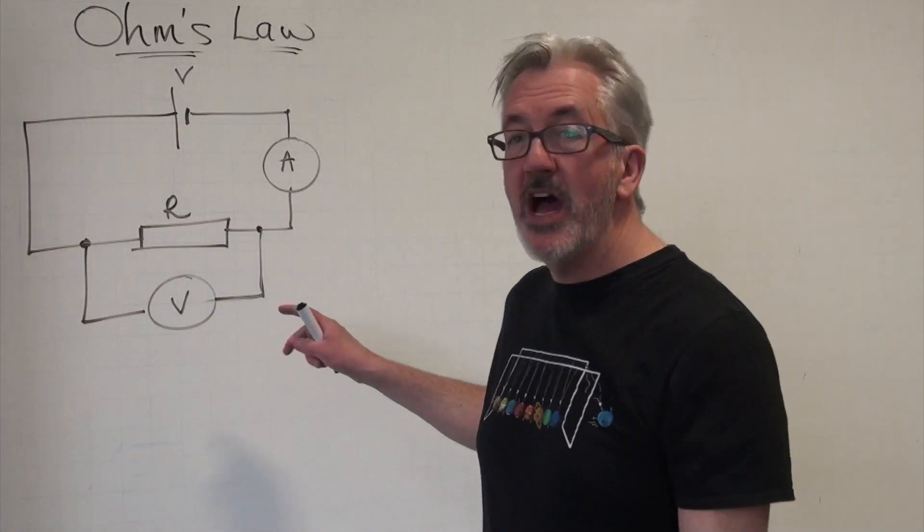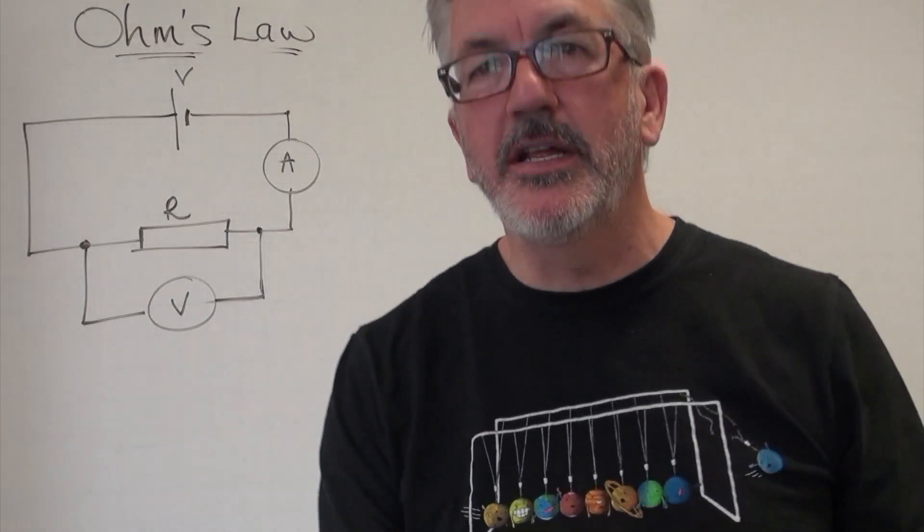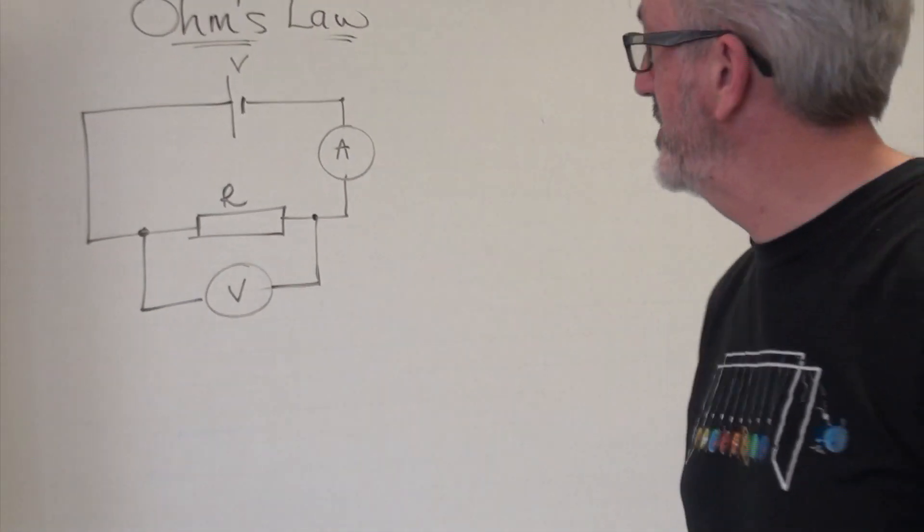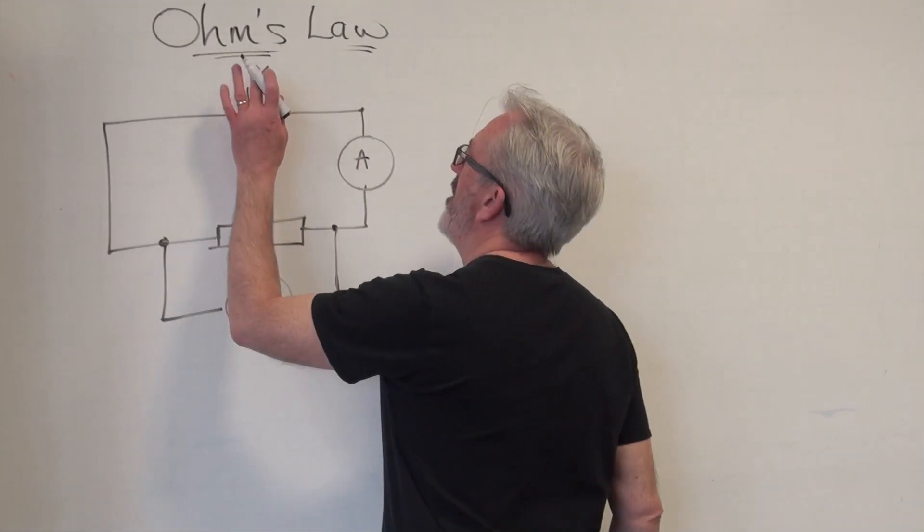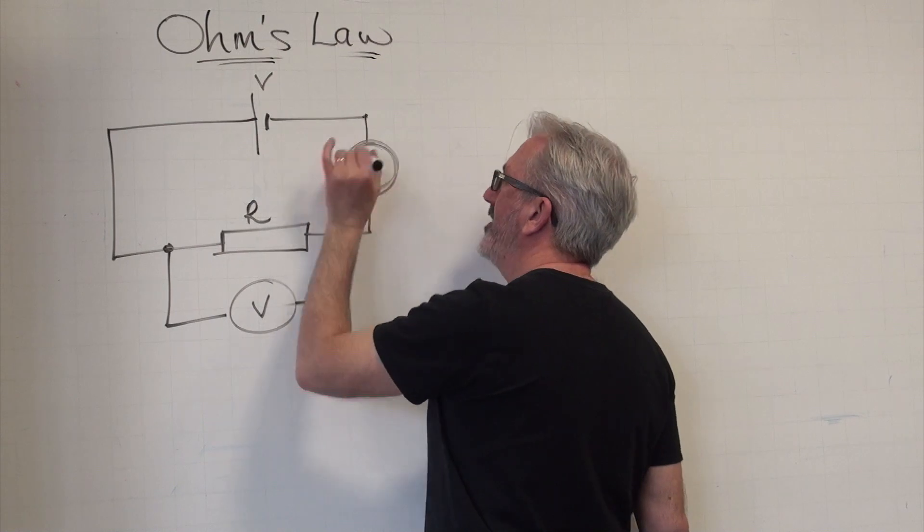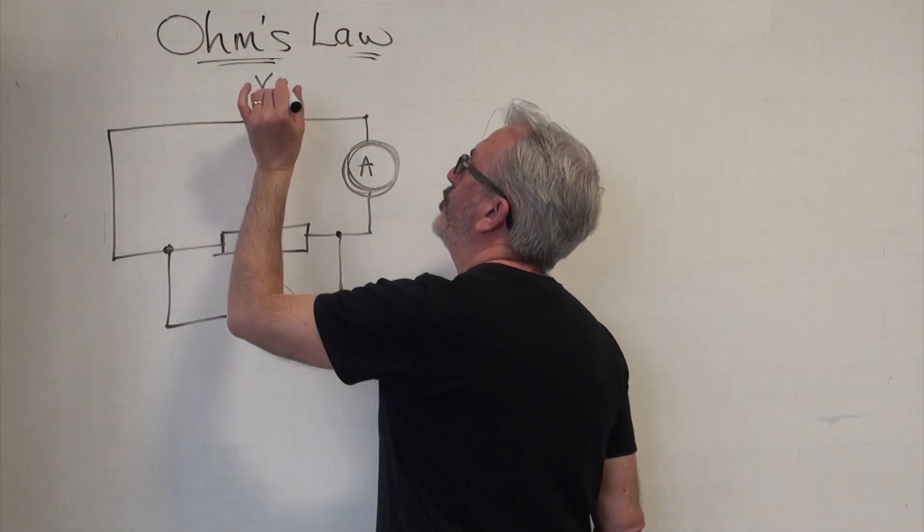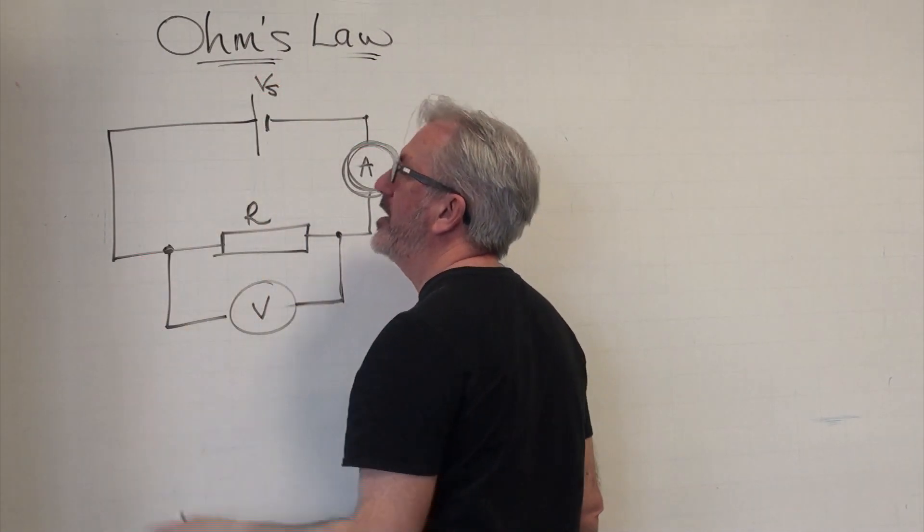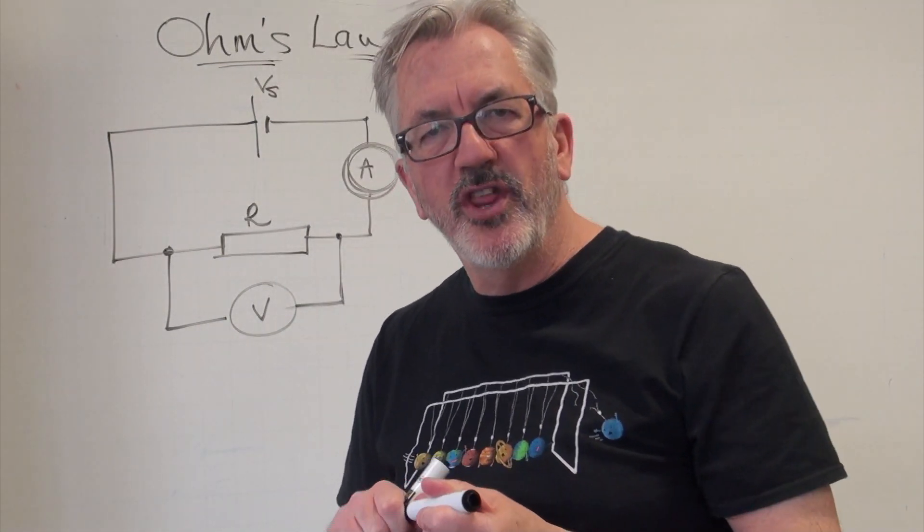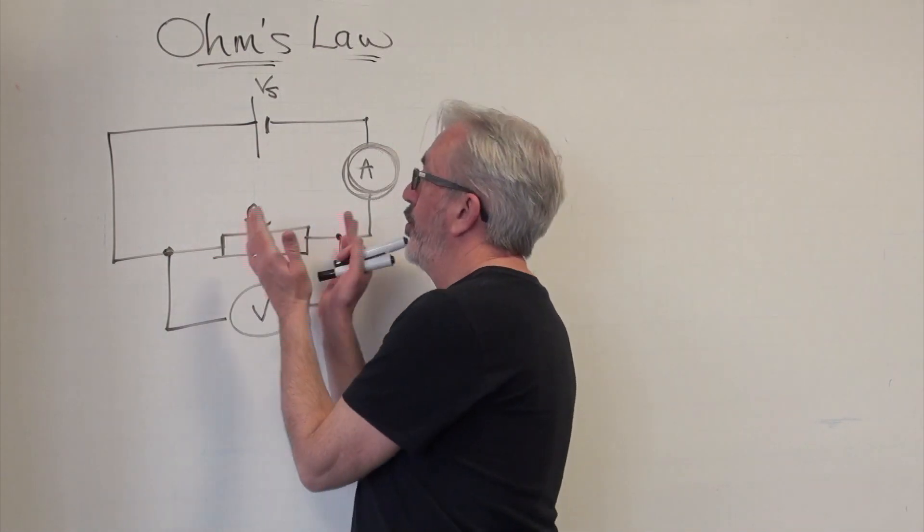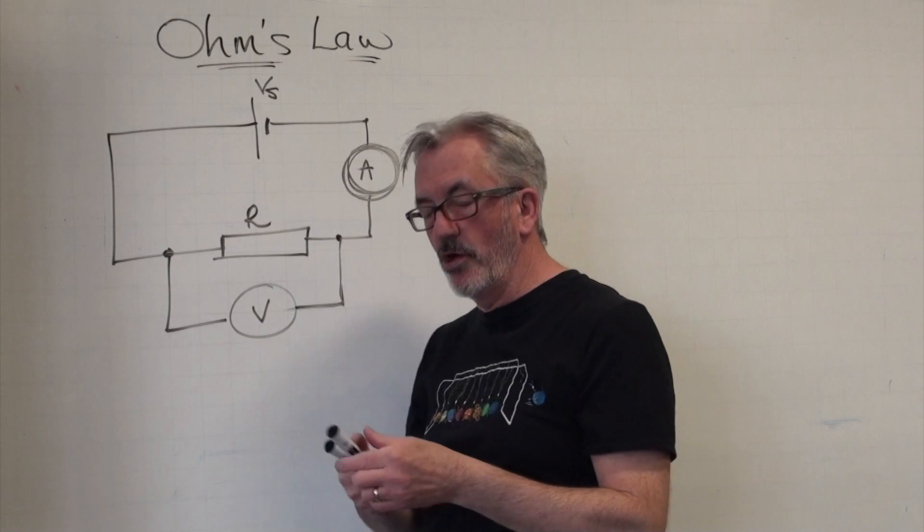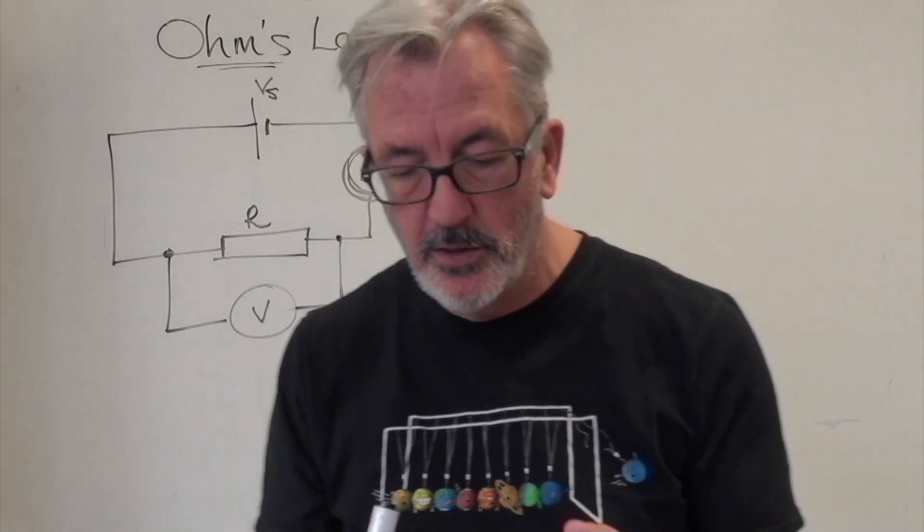In a circuit, how are these three quantities related to each other and how do they affect each other? So, if we have a fixed resistor, can you see that? If we have a fixed resistor there, then what effect will there be on the current in that circuit if we change that supply voltage?